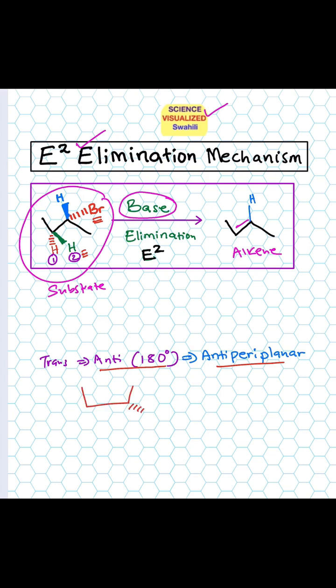If one group is going in, say bromine, then the other group must be coming out, the hydrogen. That means you have about 180 degrees, so it's a trans relationship. We call that anti-periplanar.